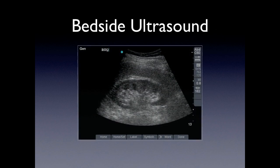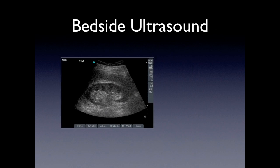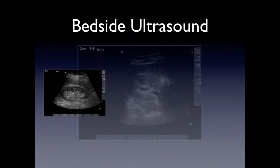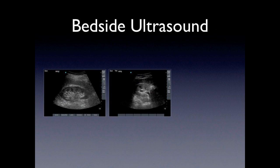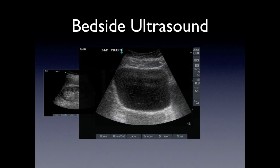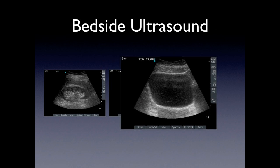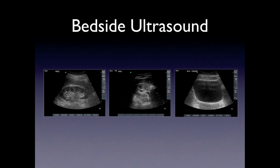In the lab today, you're going to be acquiring basically three windows: a kidney in the coronal view, a kidney in the transverse view, and the bladder in the transverse view.